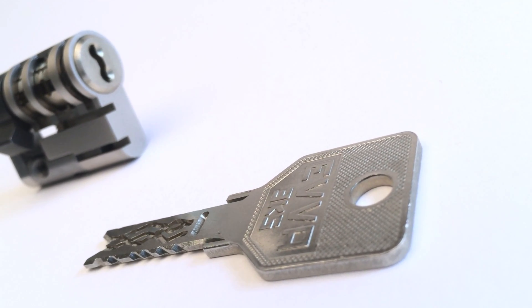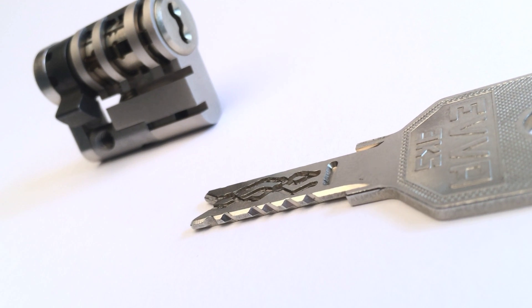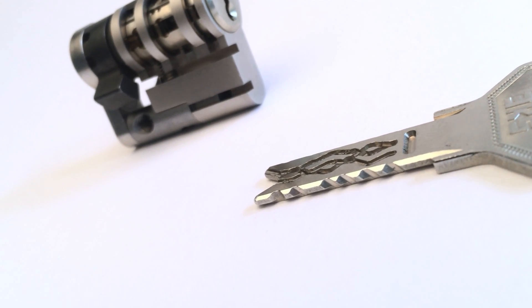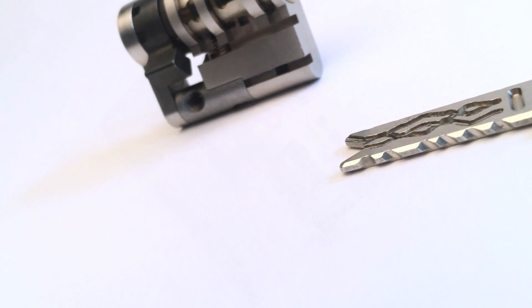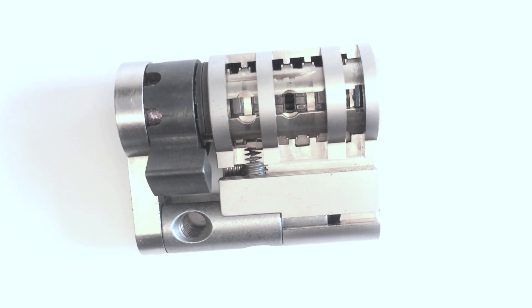This lock uses a unique springless operating system. Unlike conventional pin tumblers, the locking elements move along the curves on the key and are not driven against any spring force. EVA locks are manufactured in Vienna, Austria.